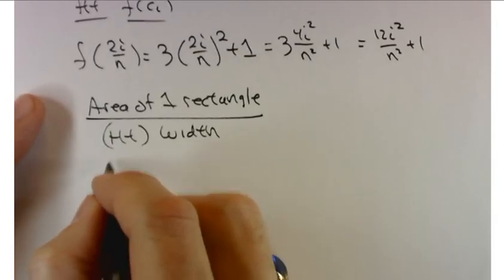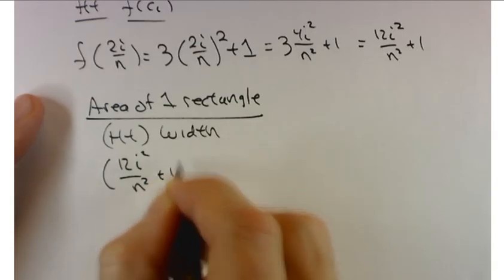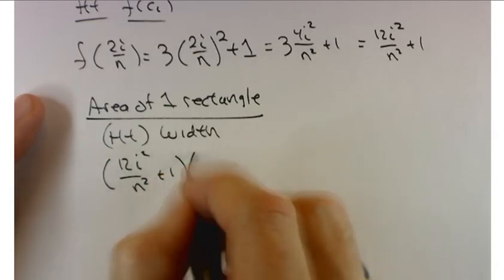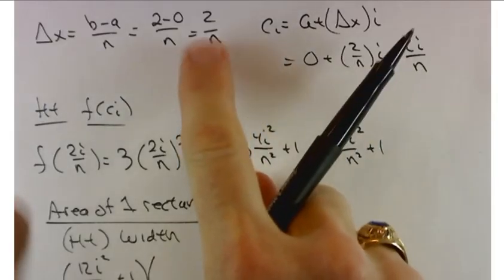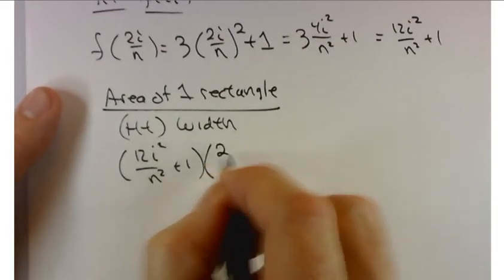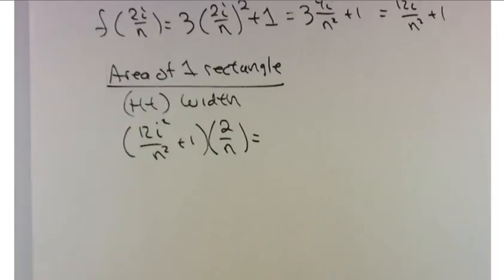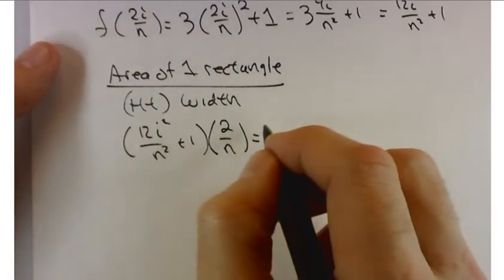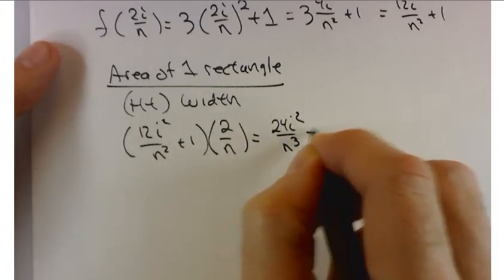It's going to be the height times the width. And that expression would look like 12i² over n² plus 1 times the width. Let's be careful. The width isn't this. The width is this one right here. So times 2 over n. Let's distribute that and clean this up a little bit before we put it in a summation.